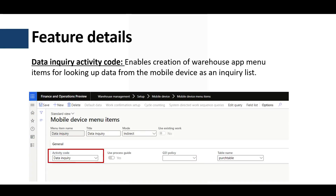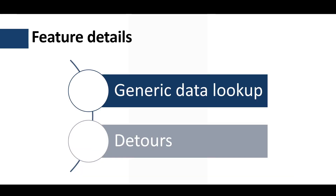This feature is available since application release 10.0.29 and it's managed by the Feature Management Workspace. Once the feature is enabled, a new activity code for the data inquiry will be available. The data inquiry menu item can be used as a generic data lookup menu item so users can inquire for specific information, and also as a data menu item so users can copy and paste data across menu items during the same flow.